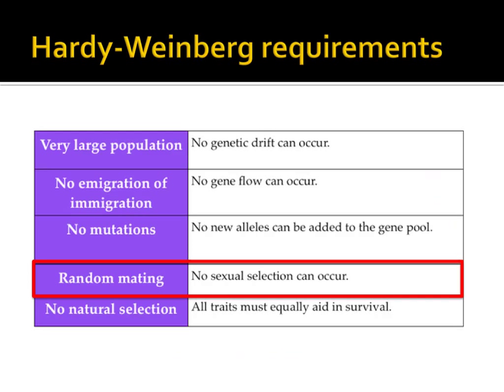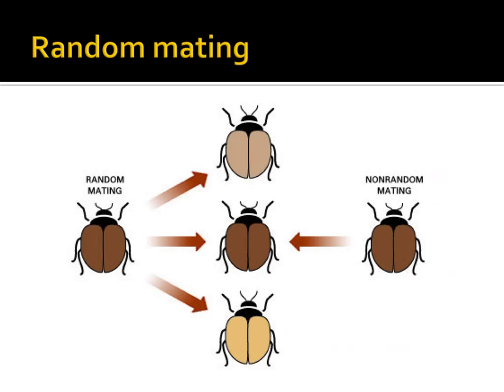The fourth requirement for a population to be in Hardy-Weinberg equilibrium is that the population must have random mating — that is, no sexual selection can occur. Sexual selection is another term that would apply to forms of isolation described in a previous video. When individuals prefer certain, and sometimes outlandish, features in their mates, sympatric isolation can occur. Mating of brightly colored tropical birds would provide a real world example of this. The mating habits of bugs shown on this slide would also provide an example.